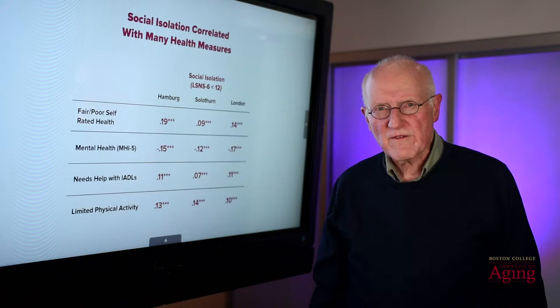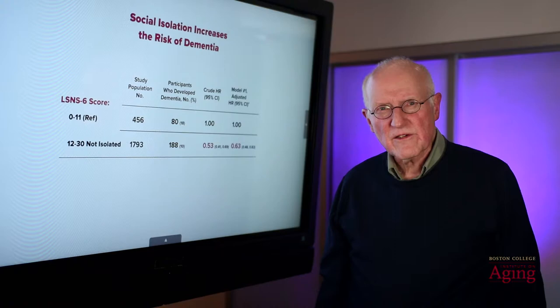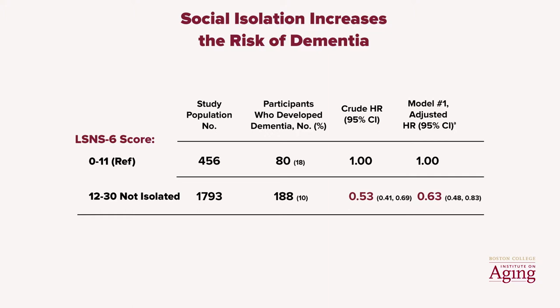A few years later, we conducted a longitudinal study in Los Angeles using the LSNS-6 as a measure of social isolation. The focus of this study was on identifying factors that increased the risk of cognitive impairment. We found that those who were deemed socially isolated at baseline were twice as likely as those with strong social ties to report symptoms of cognitive impairment by the end of the four-year period of the study.